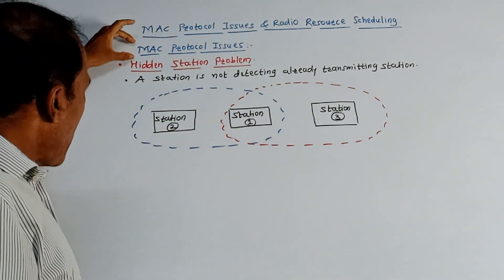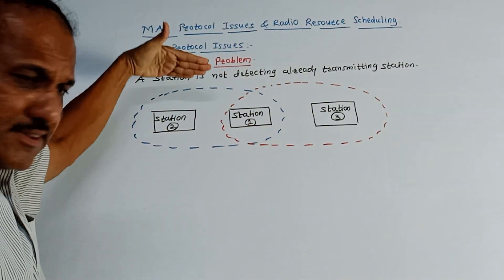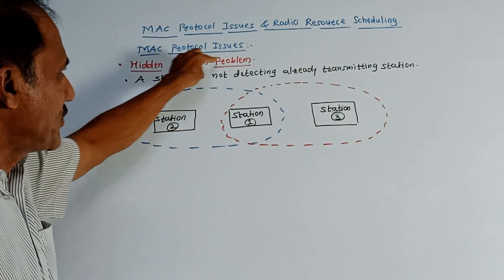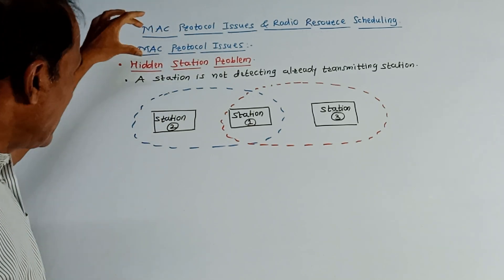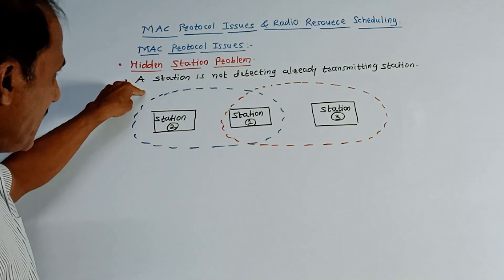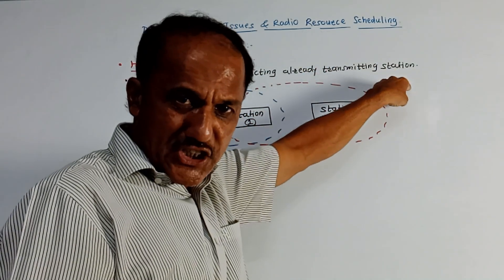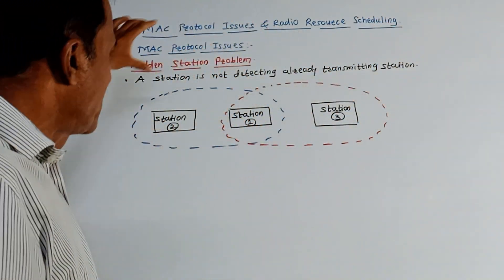First we'll talk about MAC protocol issues. We'll be discussing two important issues related to the MAC protocol. First is hidden station problem. What does this mean? If a station is not detecting an already transmitting station, then it is called hidden station problem.